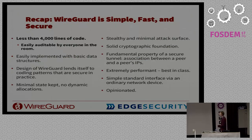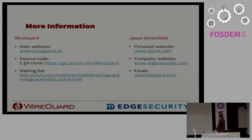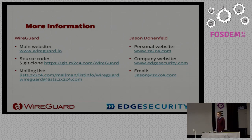To recap: under 4,000 lines of code — all of you can read it and I'd be very happy if you did, found bugs, audited it. It can be easily implemented with basic data structures. The design patterns lead to secure programming. It's stealthy, has solid crypto, uses crypto key routing which simplifies the networking stack, provides an ordinary network interface so you can use all the tools you already know, and it's very fast. A lot of choices have been made for you — it's opinionated. For more information go to wireguard.io. It's already in many distros: Debian, Gentoo, Fedora, and others.